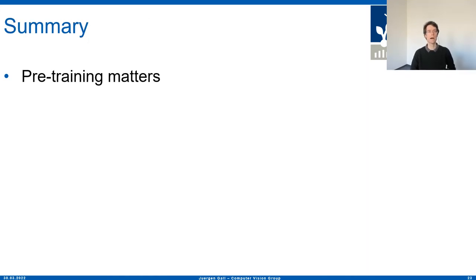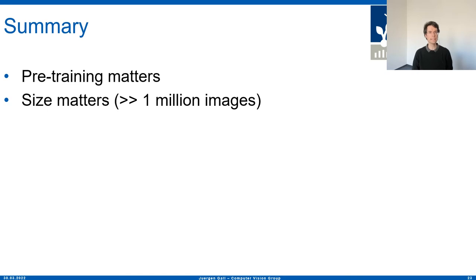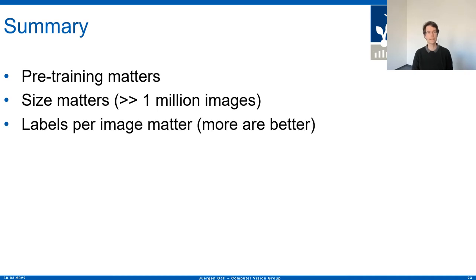To summarize: pre-training matters a lot. It's not only a way to reduce training time, but it also has a big impact on accuracy. You need to use pre-training if you want good results, unless your dataset already has millions of annotated images. The size of the pre-training dataset matters — one needs clearly more than one million images, and going up to 300 million images can yield further improvements. Having more labels describing the content for pre-training also improves accuracy.